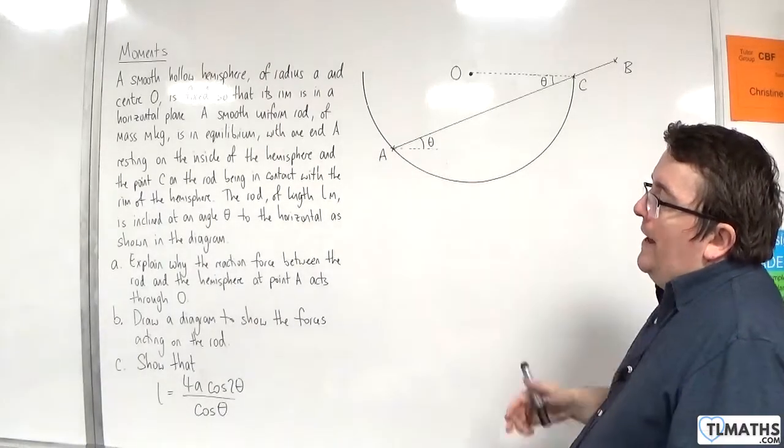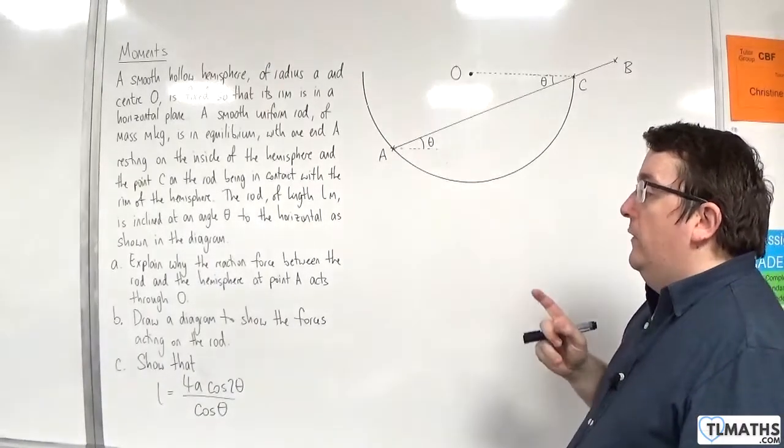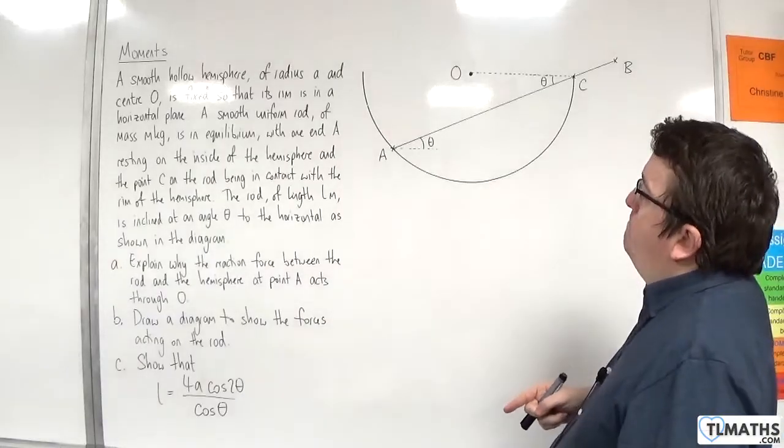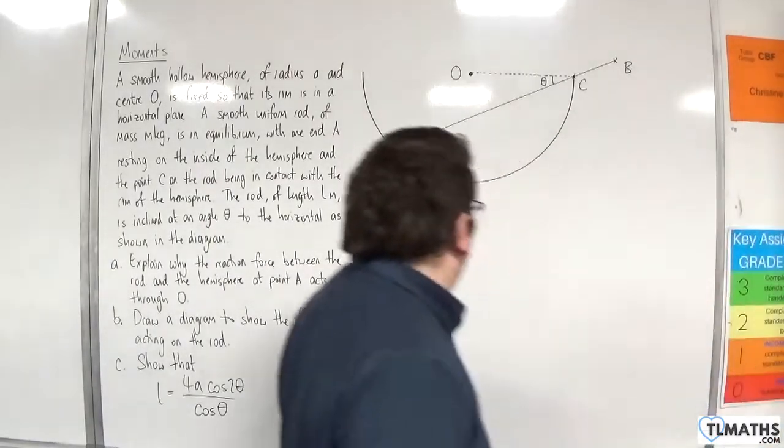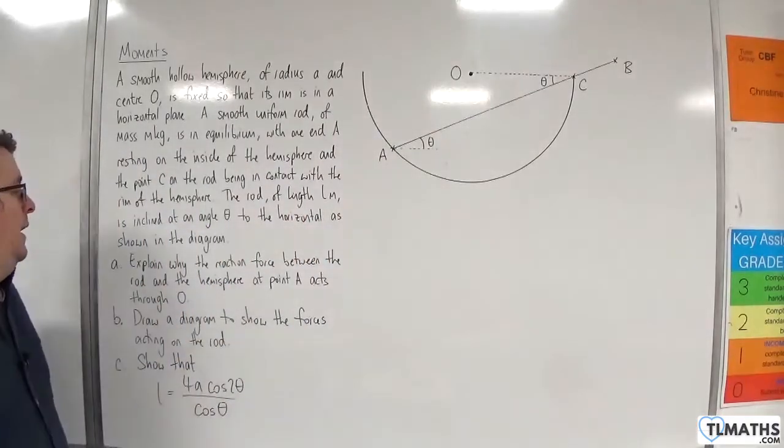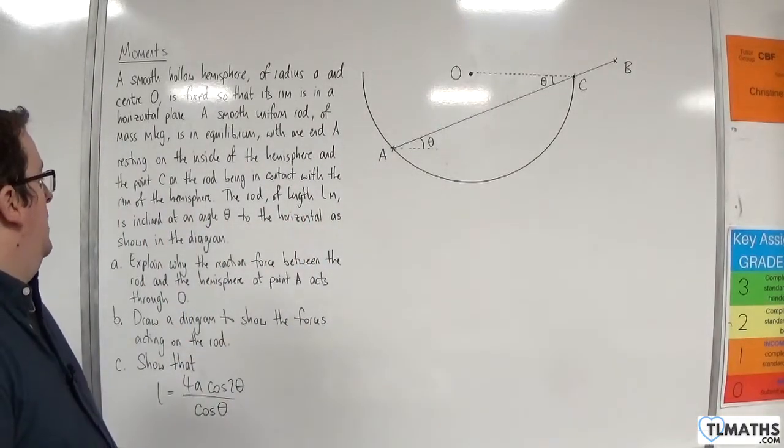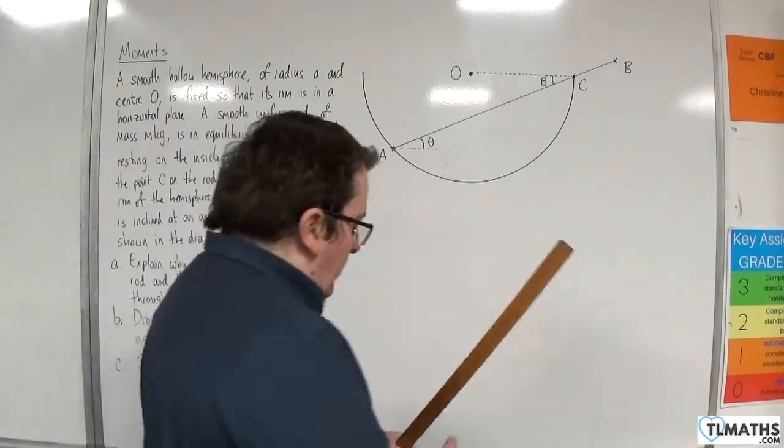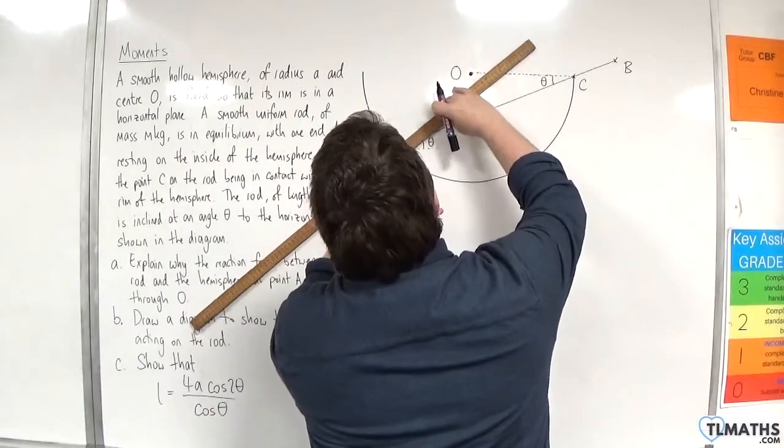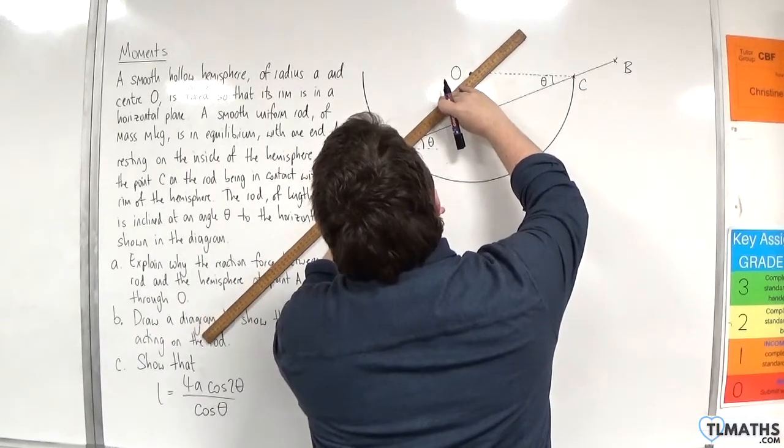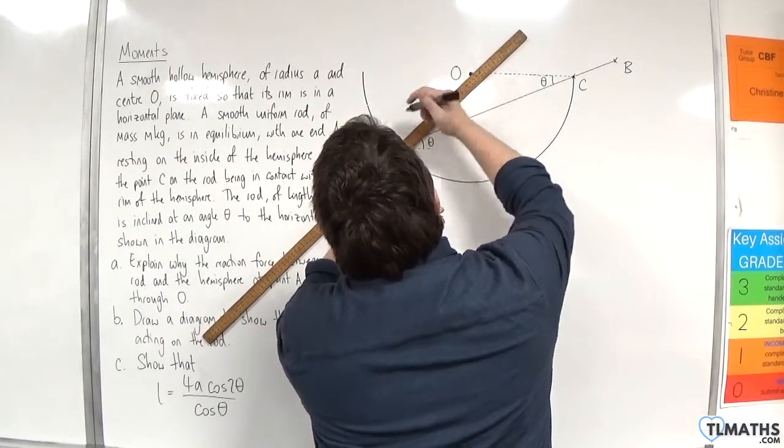Part B. Draw a diagram to show the forces acting on the rod. Let's start off then. Well, we've been told in part A that the reaction force is going to be going through O. So we can label that on our diagram.